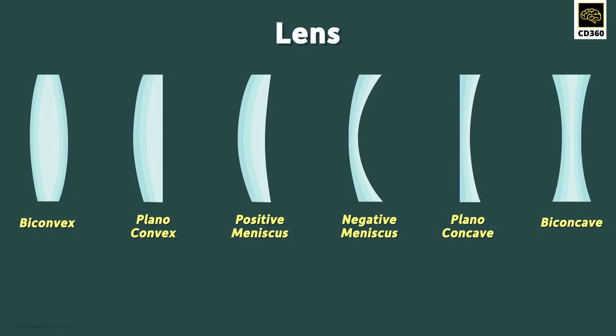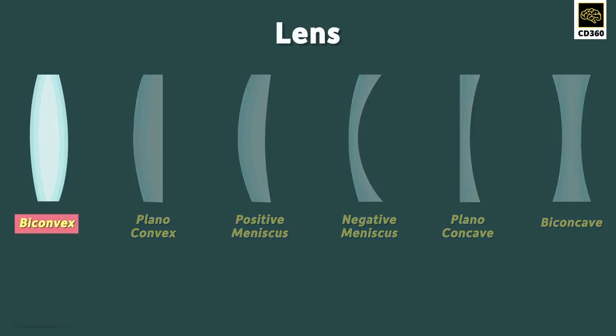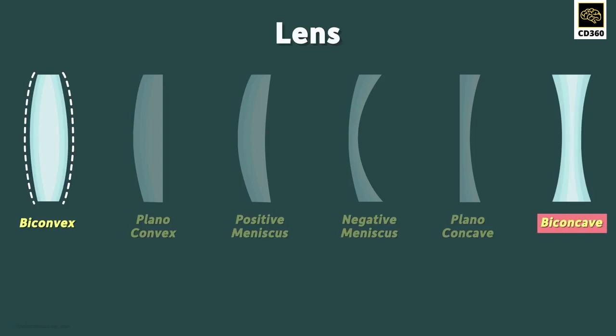Note that they are drawn in a two-dimensional space, but you can imagine their appearance in three dimensions. A biconvex lens is a lens in which the two bounding surfaces are spherical and curved inward. Similarly, a biconcave lens is a lens with two spherical surfaces, both curved outward.